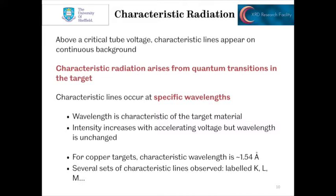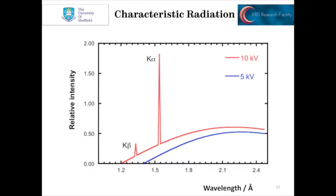We see various different characteristic lines, which we call K, L, M, and so on. When we are below the critical voltage — for example, 5 kilovolts — we don't have any characteristic radiation being produced. When we increase the tube voltage to 10 kilovolts, we start to see the K-alpha and K-beta lines emerging.